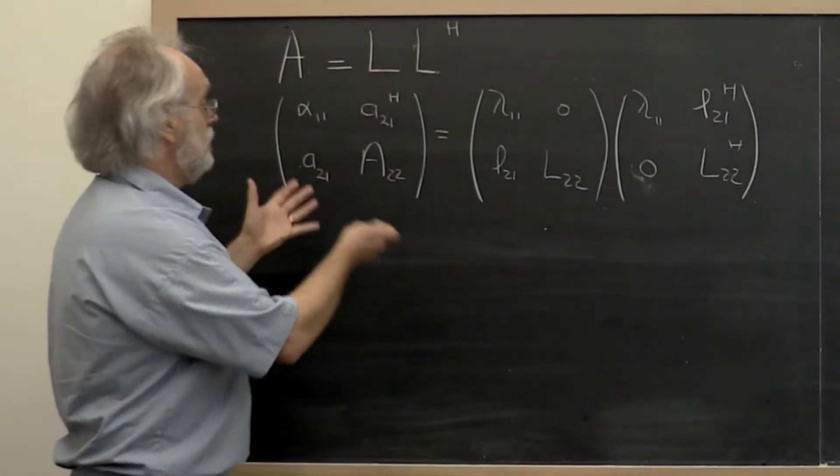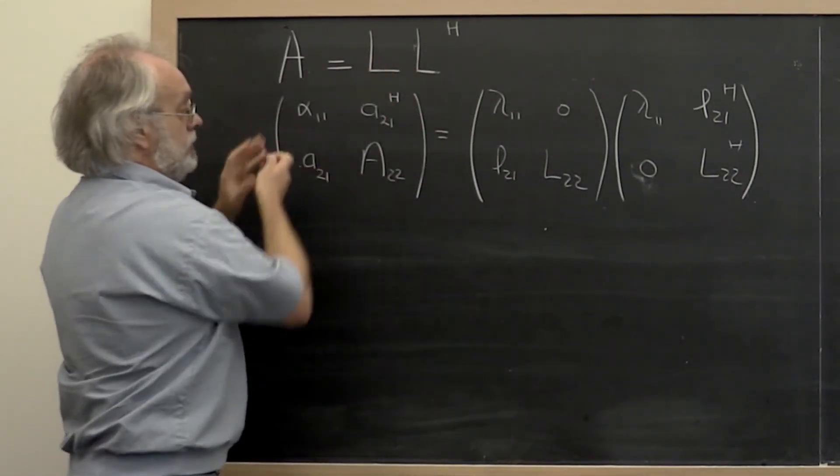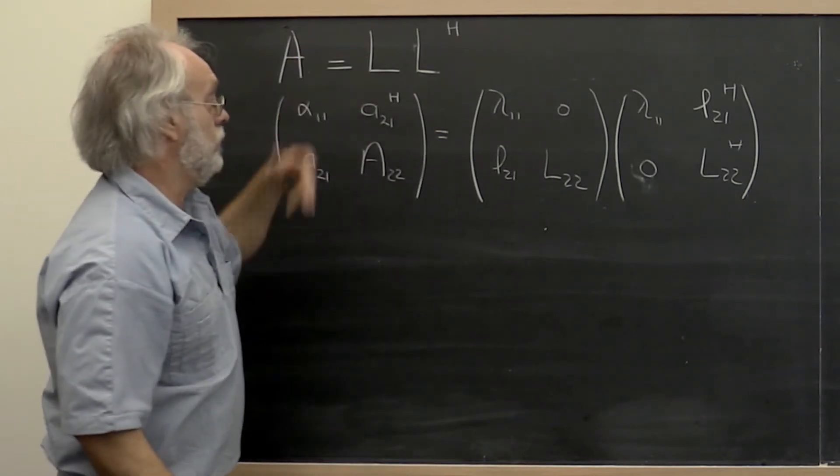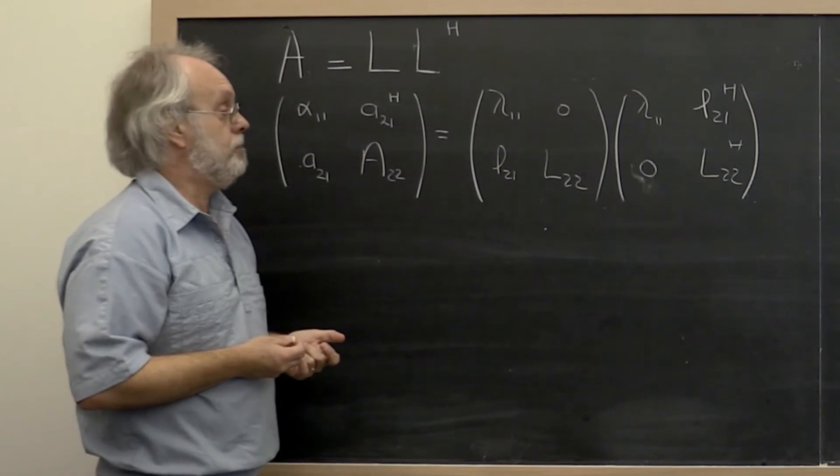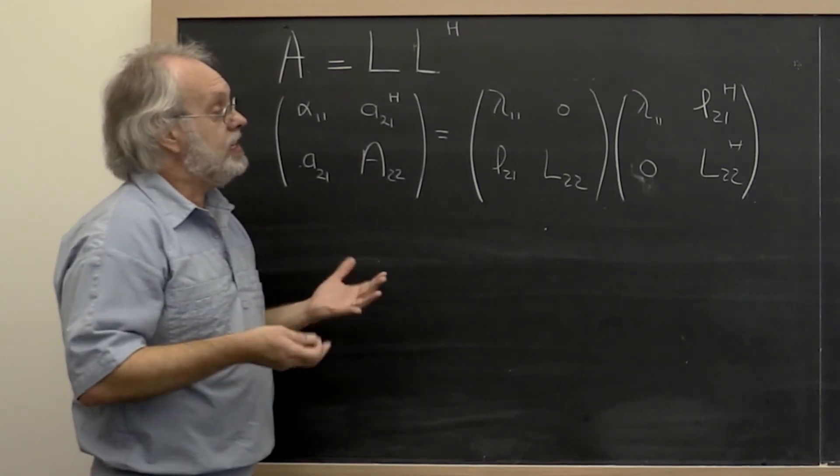So now we have partitioned our matrices and we've plugged those partitioned matrices into the equation that we're after that defines the operation. And what's the next step we typically do?